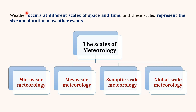Weather is the condition of air at the earth's surface. It occurs at different scales of space and time, and these scales represent the size and duration of weather events. The study of the atmosphere can be done at different scales — in terms of space, from a few centimeters to thousands of kilometers, and in terms of time, from a day to a week or an entire year. Thus, meteorology is classified into microscale meteorology, mesoscale meteorology, synoptic scale meteorology and global scale meteorology.